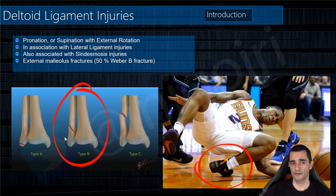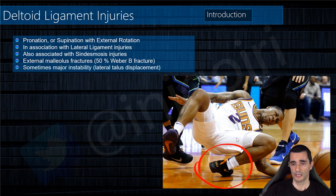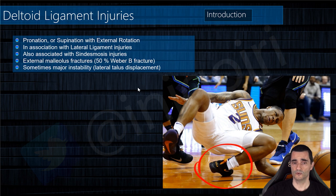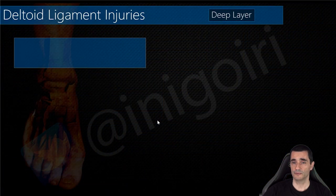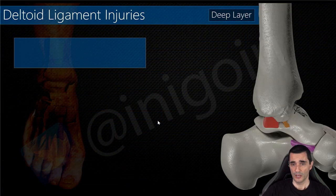Type B external malleolus fractures are associated in 50% with some kind of deltoid complex injury. If we have an injury of both the external and medial complex, a major instability of the ankle may be present. Always check for talus displacement on x-rays or other complementary exams.